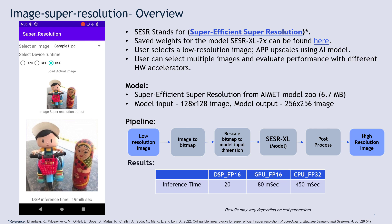The bitmap is rescaled to the model input dimension. This rescaled bitmap is given to the model as input. The output of the model after post-processing is the high resolution image.